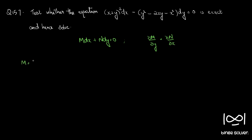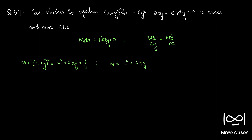We first write down what M and N are. M is (x+y)² which expands to x² plus 2xy plus y². Our N, taking the minus sign inside, gives x² plus 2xy minus y².